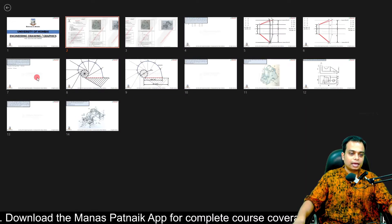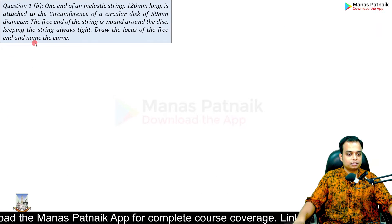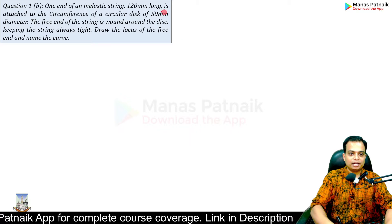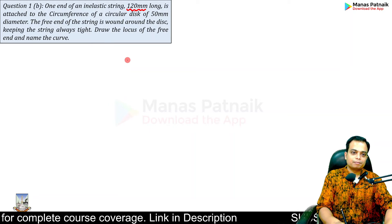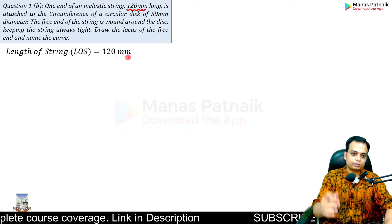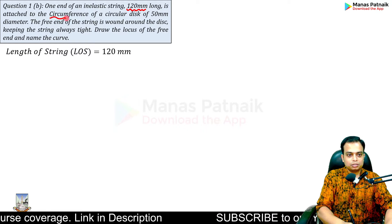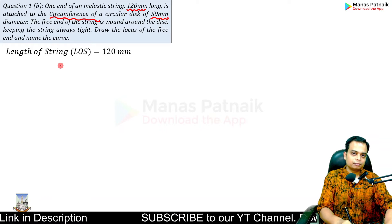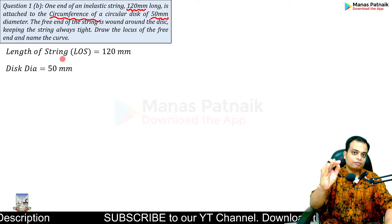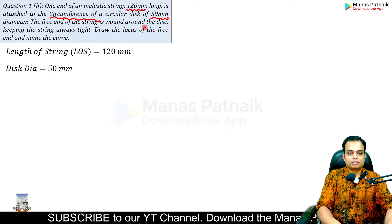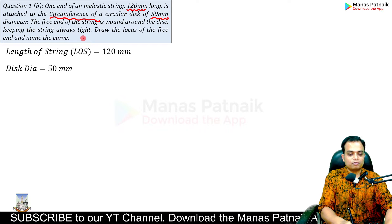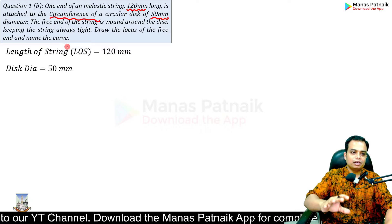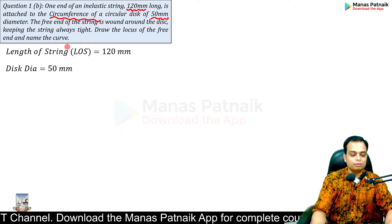Let's begin the construction. First, let's read the question once again and extract the data. One end of an inelastic string 120 millimeters long — that is the length of the string — is attached to the circumference of a circular disc of 50mm diameter. The free end of the string is wound around the disc, keeping the string always tight. Draw the locus of the free end. The locus of the free end will eventually transition into an involute.